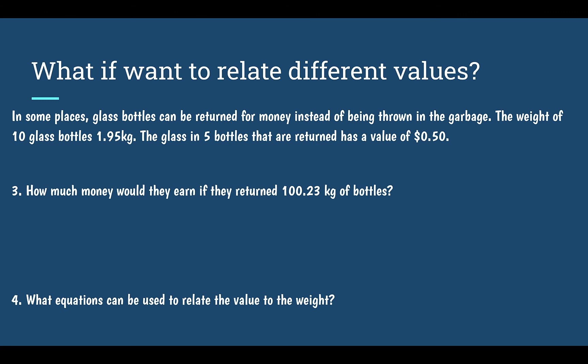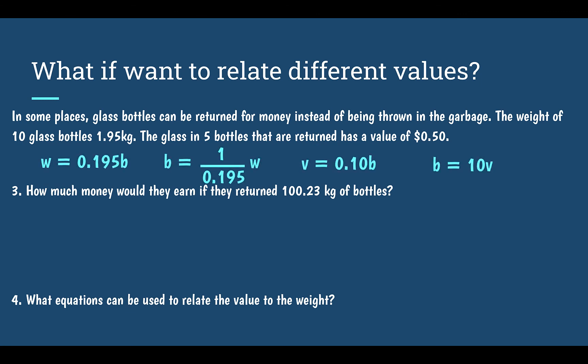Two more questions using our same information — same four equations. How much money would they earn if they returned 100.23 kilograms of bottles? Money is talking about V for value.